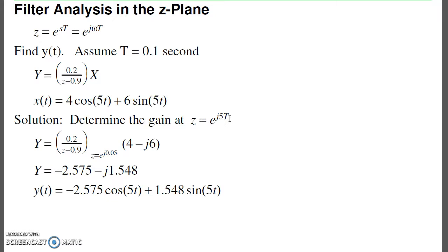In the z-plane, since z is related to the s-plane by z = e^(sT), I plug in z = e^(jωT). If my sampling period is 0.1 second and I have the following filter with its input, I'll analyze the gain of the filter at s = j5, or z = e^(sT), times the input at that frequency. Multiply it out and get a complex number. The real part means cosine, minus j means sine.